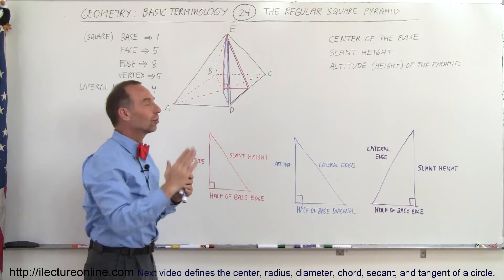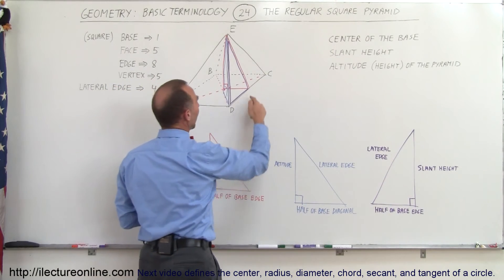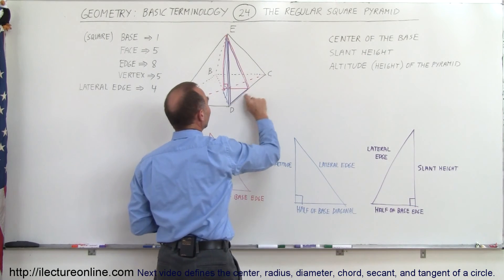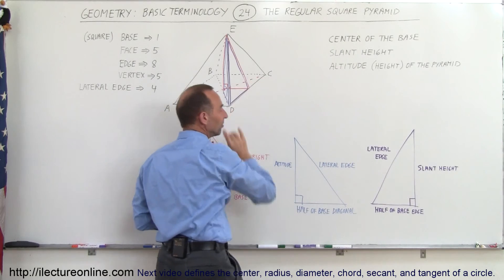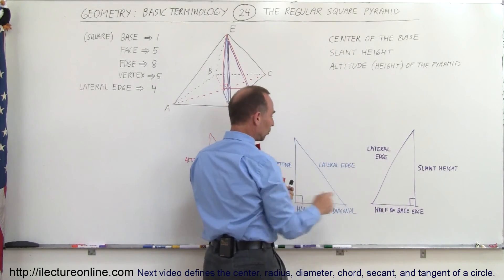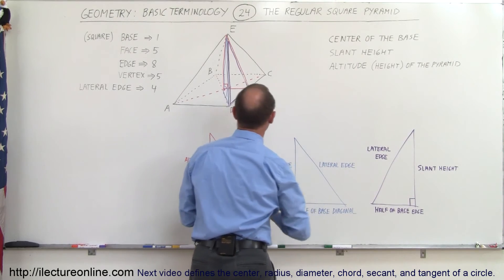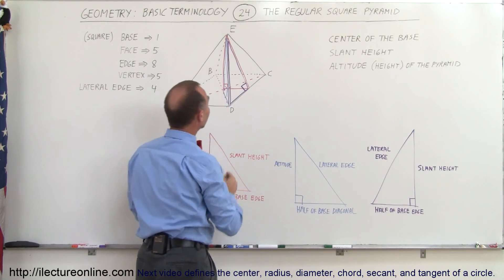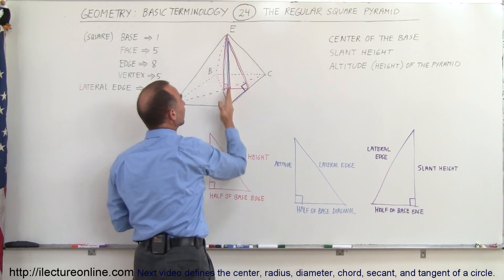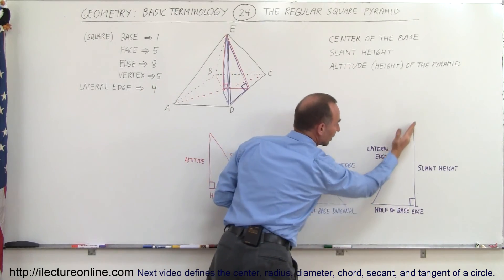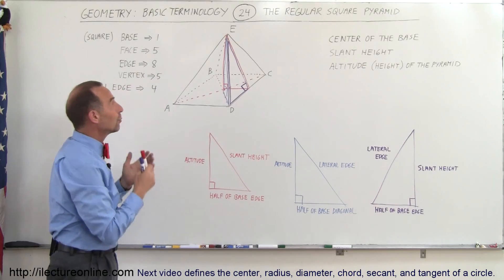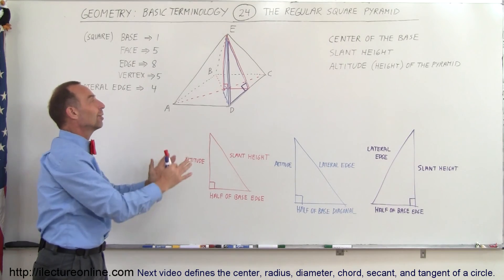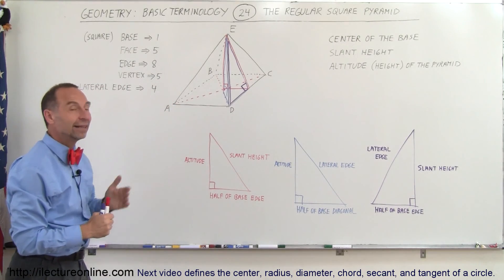The third right triangle is formed by the purple lines and is basically half of one of the lateral slanted sides. One leg is the slant height — the vertical line along the slanted face. The other leg is half of the length of the base edge. The right angle is formed between these two legs, and the hypotenuse runs along the rib or lateral edge. So the regular square pyramid contains three distinct right triangles, and it's necessary to be able to identify each one within the figure.